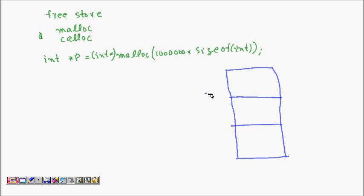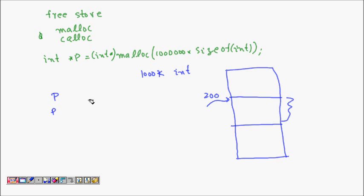What happens now is that heap memory is allocated — let's say starting at memory location 200. If you allocate 100 ints and each int is 4 bytes, then 100 * 4 = 400 bytes are used, so your array goes from address 200 to around 600. The base address is stored in pointer p.